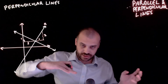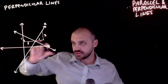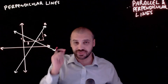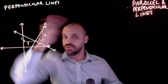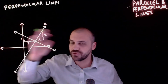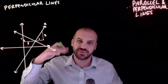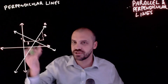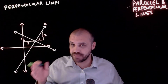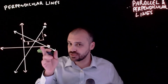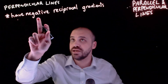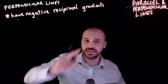One's going to be positive, one's going to be negative. So the rise over runs swap, and the sign also changes - negatives become positives and positives become negatives. There is a more rigorous proof of this involving congruent triangles, but this will do for now. Perpendicular lines have negative reciprocal gradients.